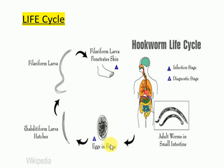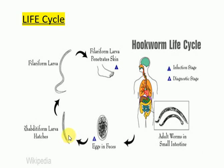Eggs are laid in feces containing a segmented ovum with four blastomeres. They are passed out in the feces of the definitive host, which is the human being — the only host. From each egg, the rhabditiform larva hatches out in the soil in about 48 hours. The rhabditiform larva molts twice: first on the third day and second on the fifth day, developing into a filariform larva in about eight to ten days.